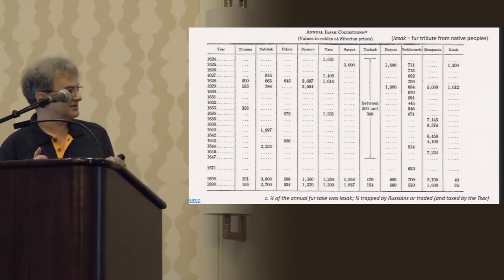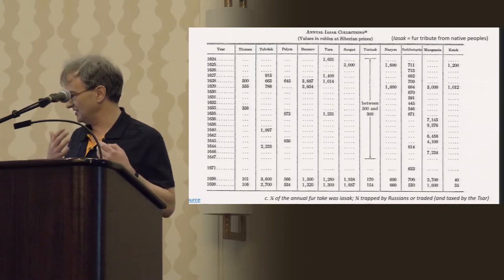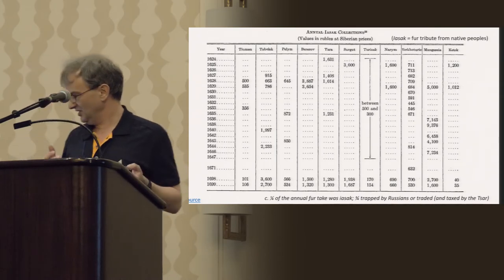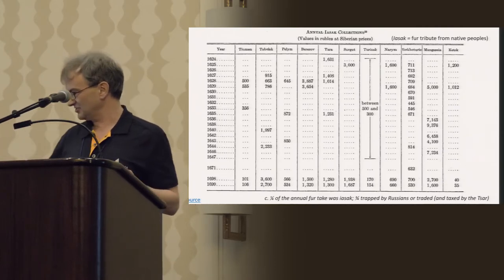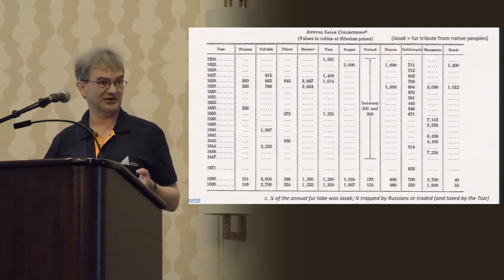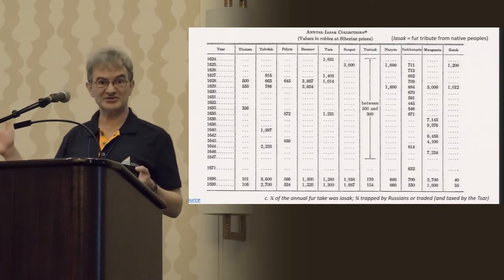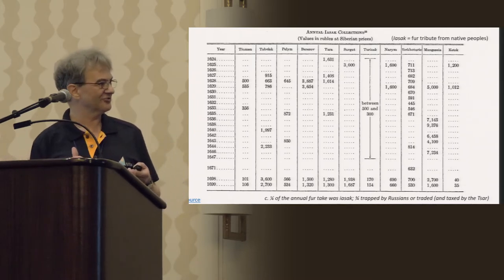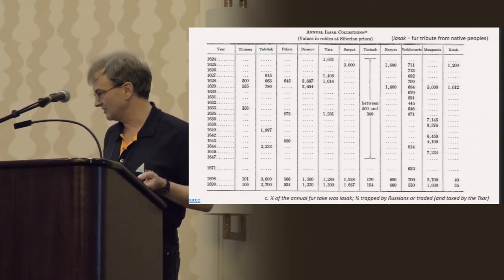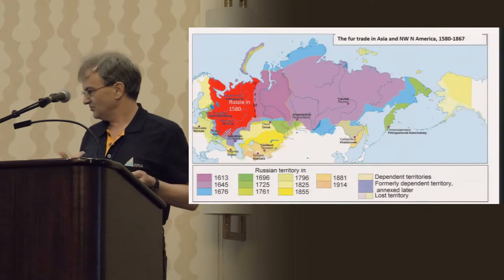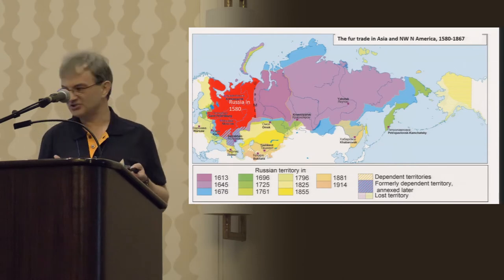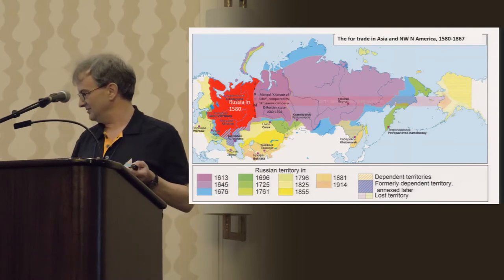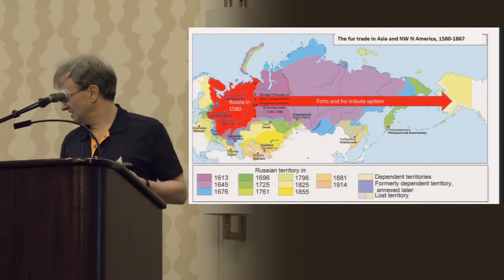The fur records in rubles for the yasak tribute show that, with really only one exception at Tobolsk, everywhere the numbers are declining fast as the century goes on — despite rising fur prices and general inflation. This is, of course, because they were trapping out everything. Tobolsk appears to hold up, but that's really only an artifact of all other yasak being funneled through Tobolsk on its way back to European Russia. You've already depleted the fur trade in European Russia, gotten control of the original Khanate of Siberia, and trapped out all the furs there too.